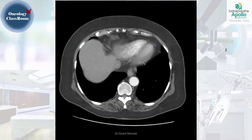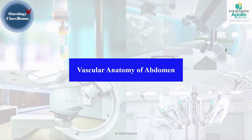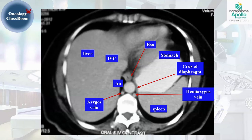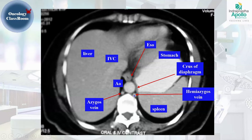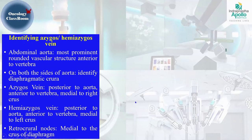Once the descending thoracic aorta pierces the diaphragm, it continues as the abdominal aorta. The liver, IVC, and esophagus are visible between the IVC and the aorta. Two circular dot-like structures on both sides of the aorta are the azygous vein on the right and the hemi-azygous vein on the left. The crura of the diaphragm and the contrast-filled stomach are also visible. Identifying the azygous veins is important because they form the basis for delineating retrocrural nodes.